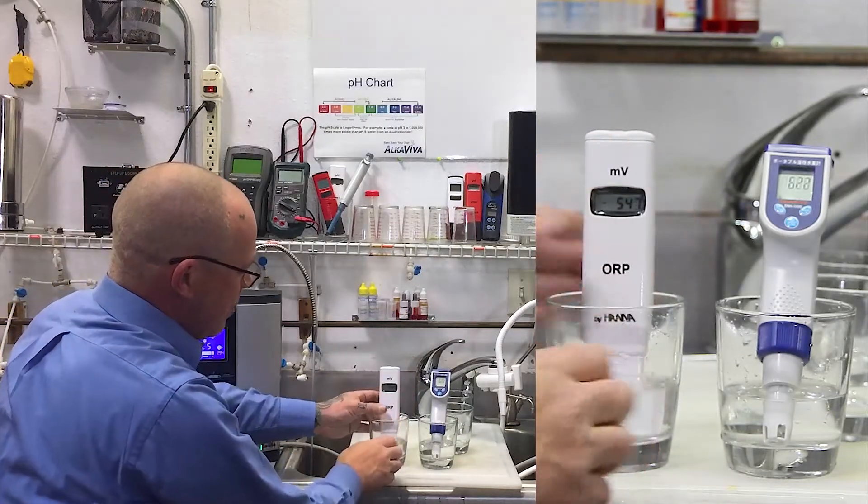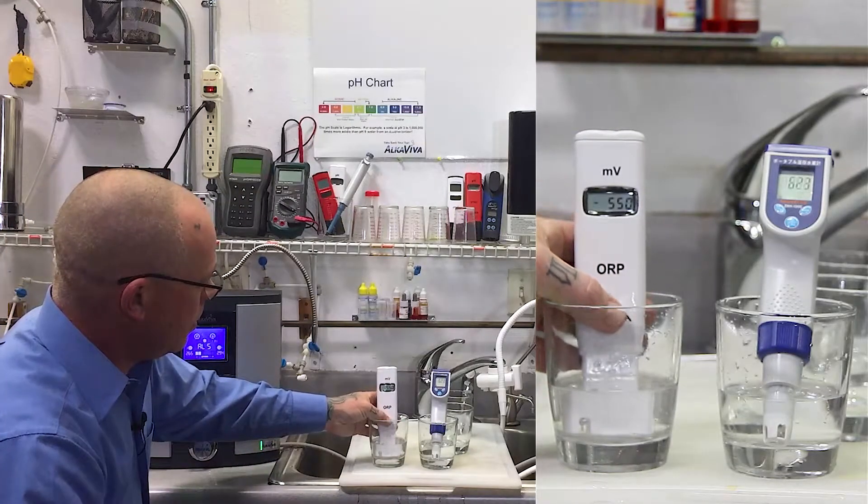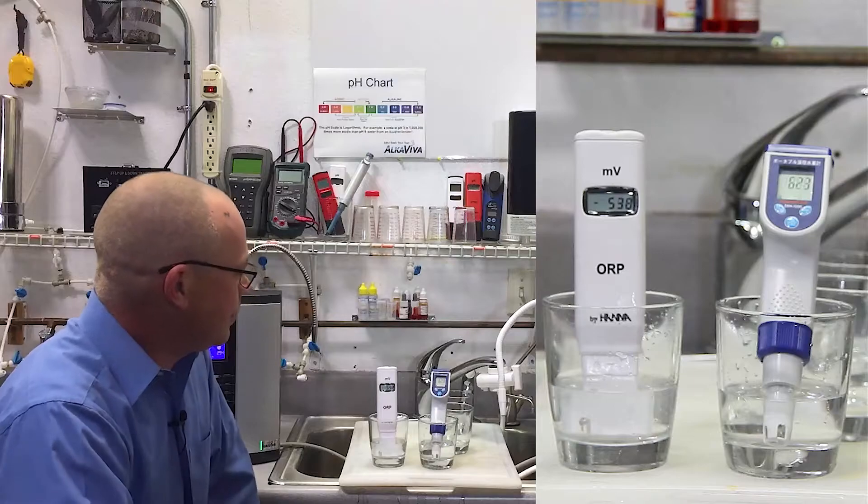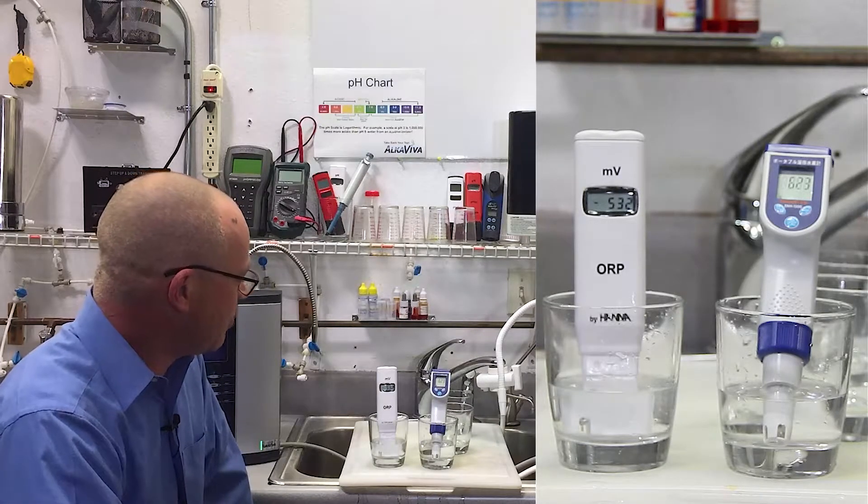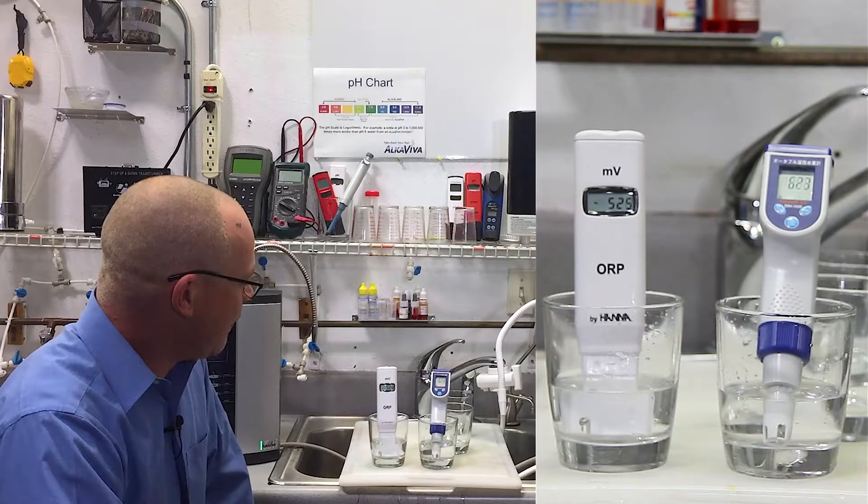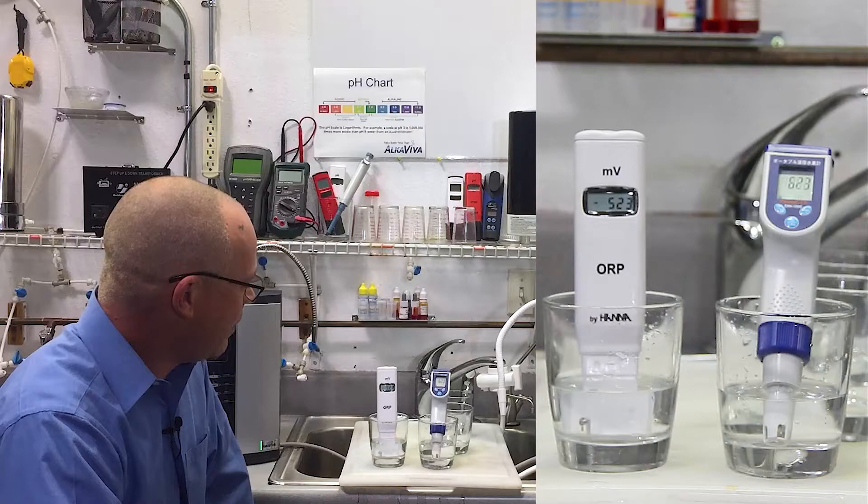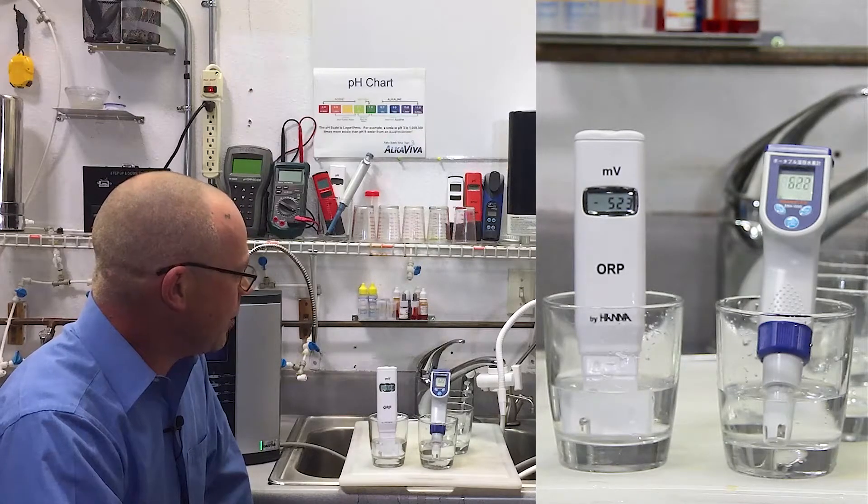I'll stand this up so the camera can see it. As you can see, the H2 meter is already at 623 parts per billion and the ORP meter's at about negative 525. It's going down just a little bit. We'll give it a minute to see if it stabilizes.